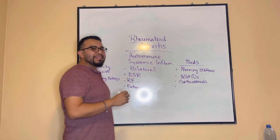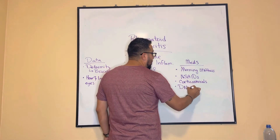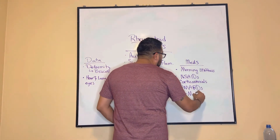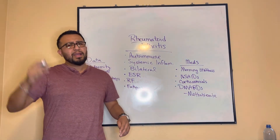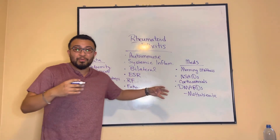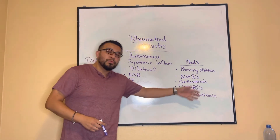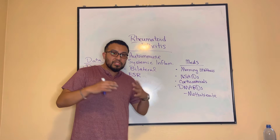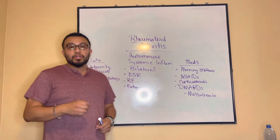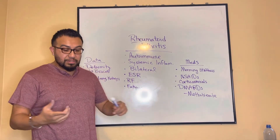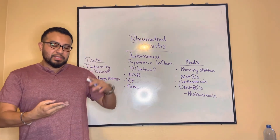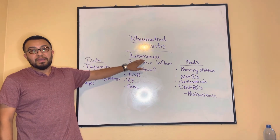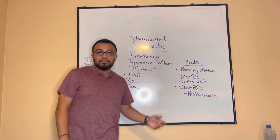The mainstay drugs for RA are your DMARDs — disease-modifying anti-rheumatic drugs — primarily methotrexate. Methotrexate is a high-priority topic because it's asked about frequently. This medication reduces bone marrow function; it's a cytotoxic drug that slows down cell division. You'll need to consider all fast-dividing cells slowing down, particularly your bone marrow, leading to pancytopenia — a lack of all blood cell types, including red blood cells, platelets, and white blood cells.